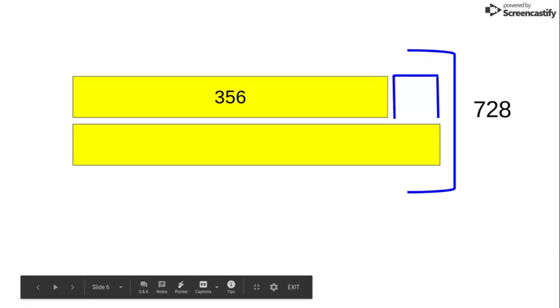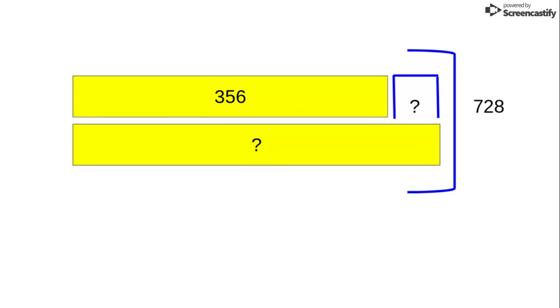Here are the bars. Here's the known information on the bars. Here, as you can see, there's two question marks, so that obviously means there's two steps, which is a two-step problem.